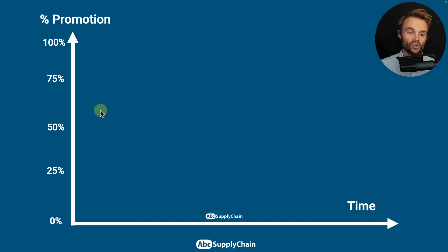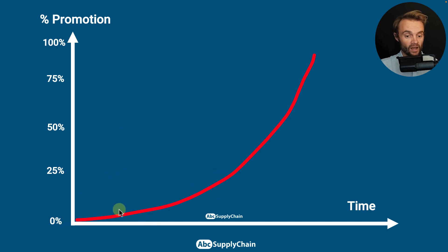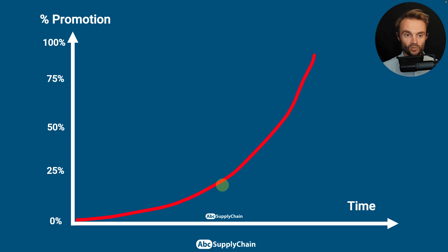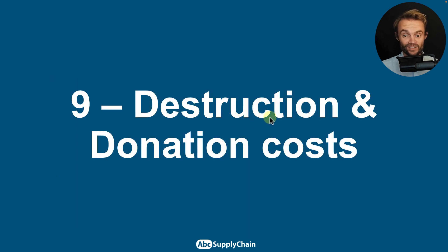Parameter eight is the promotion cost. The more you wait to promote products because you have too much inventory, the more you're going to pay. If you work in the fashion industry, for example, you don't want to wait until summer to promote winter products. The longer you wait, the more exponential the promotion cost curve becomes.